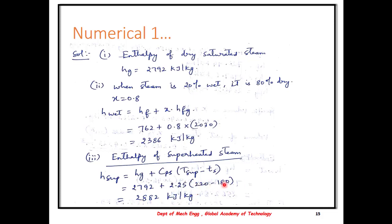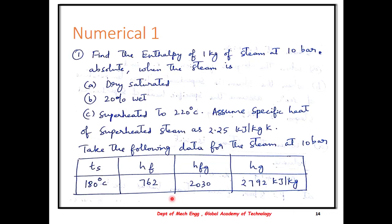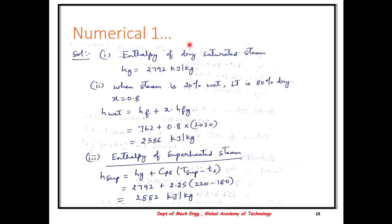In this case, when the temperature is written as a difference, you need not convert to Kelvin — it can be in degrees Celsius. Whereas when temperatures are written in terms of a ratio, such as T superheated divided by TS, they must be in Kelvin. This is how we solve the numerical. In examinations, marks are awarded for writing the values from the steam tables, performing the calculation with substitution, and providing the final answer.